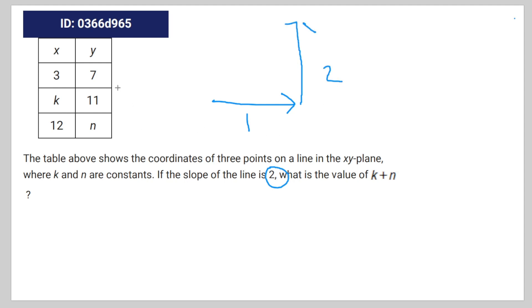So in order for the y coordinate to increase by 4, the x coordinate is going to have to increase by 4 divided by 2, which is equal to 2. So k is equal to 3 plus 2, which is 5.